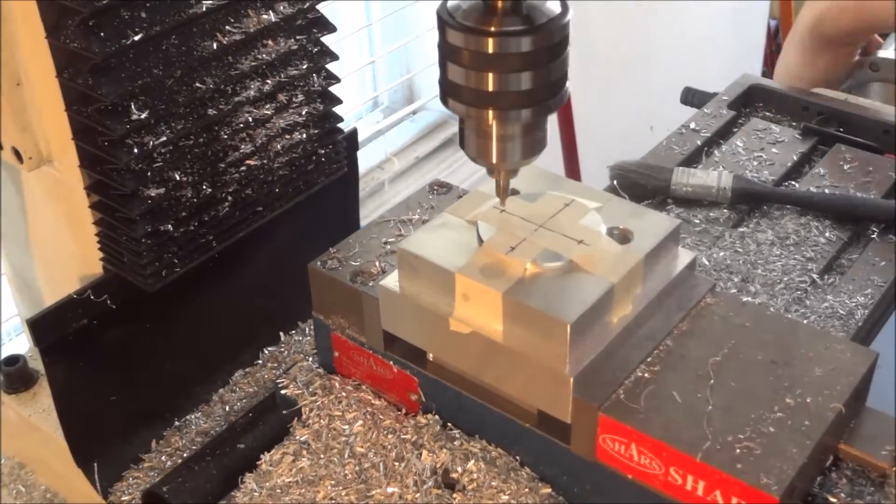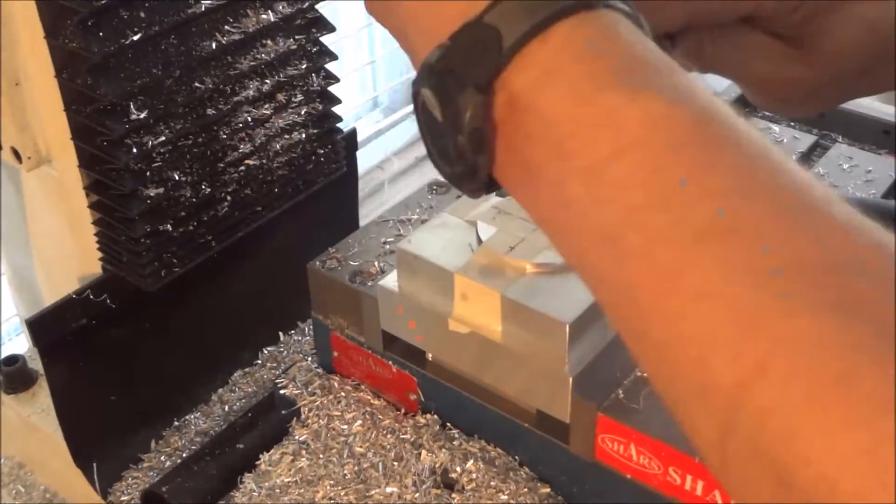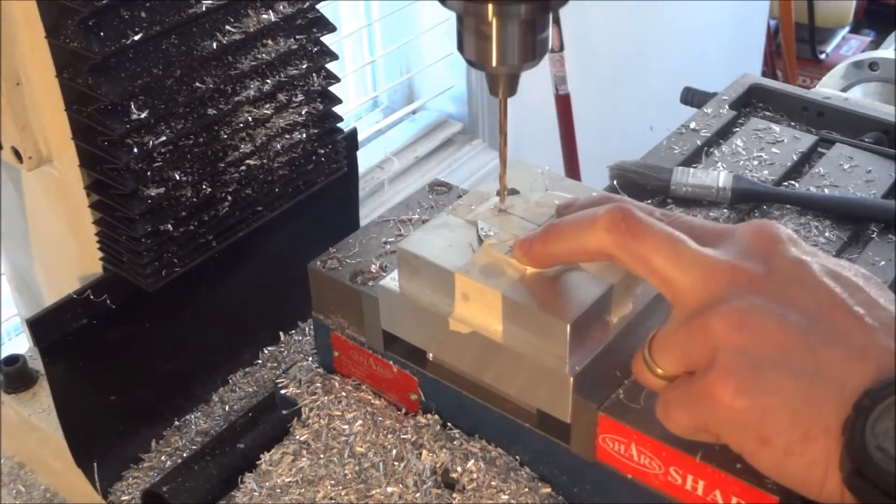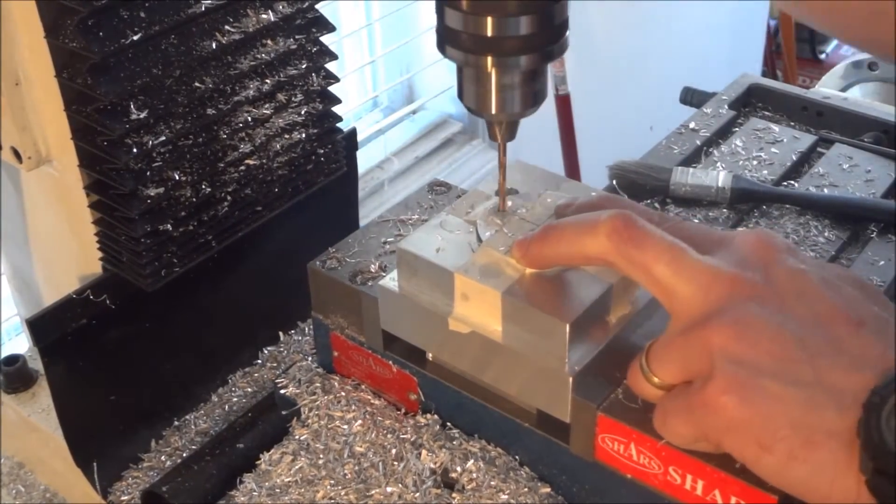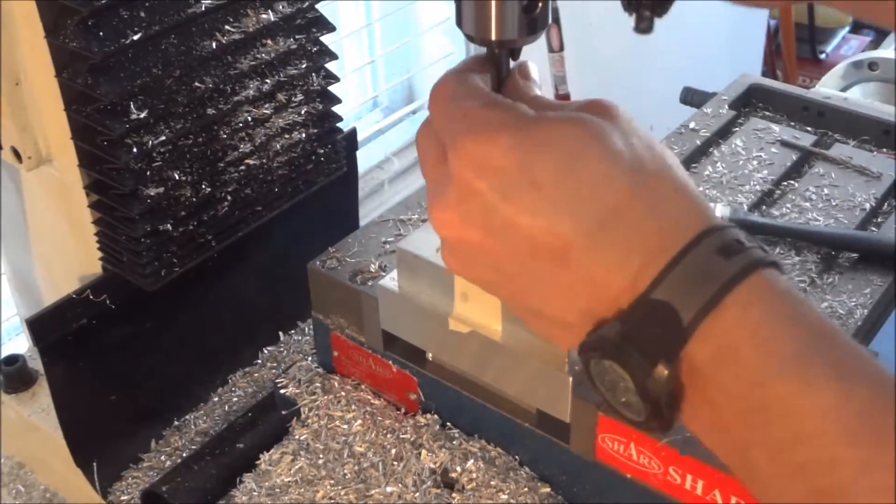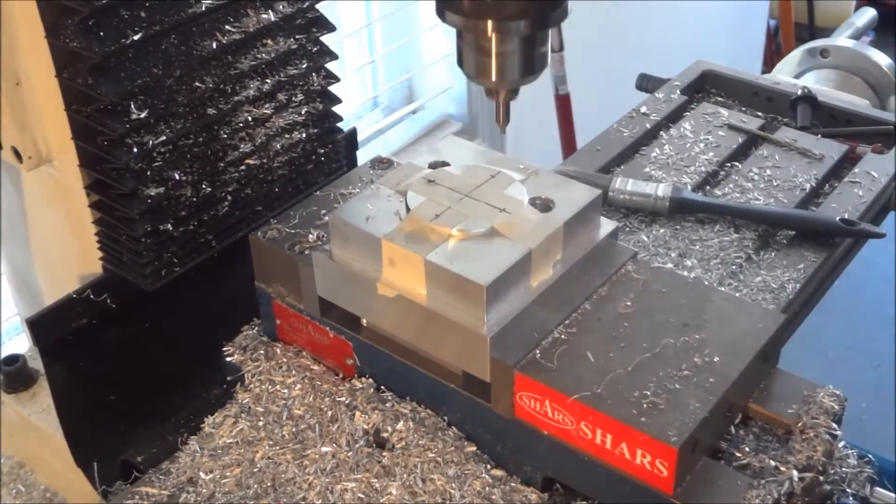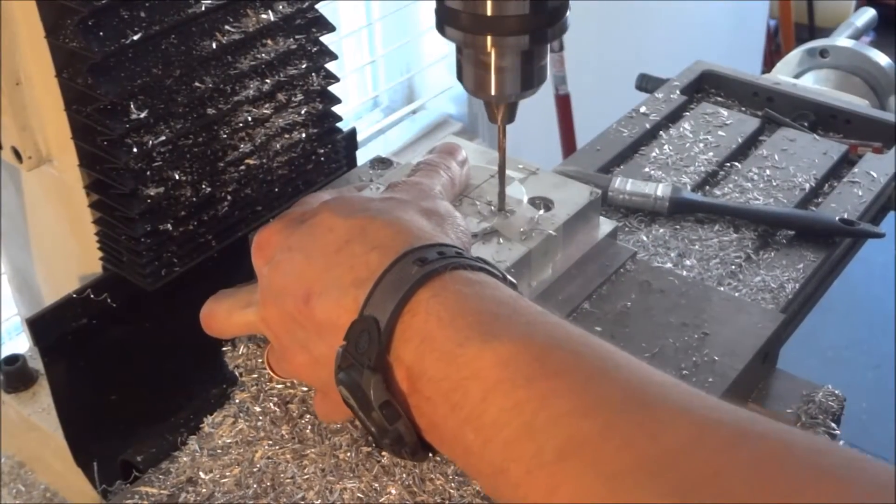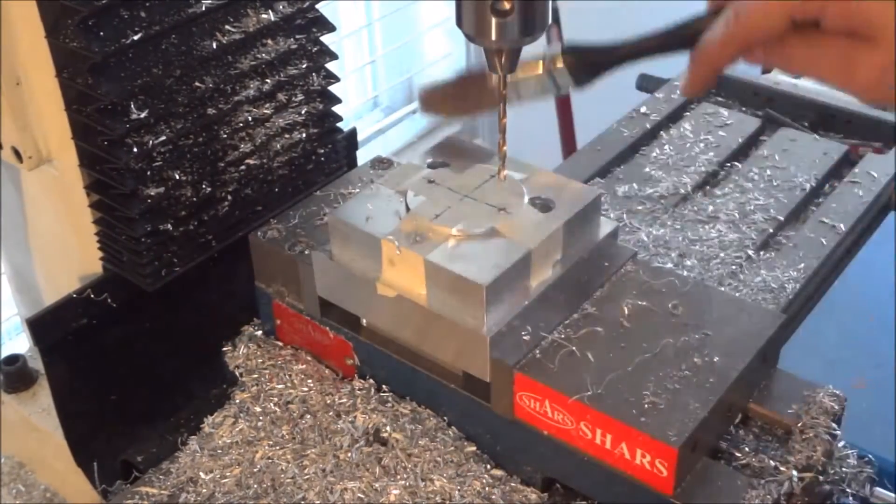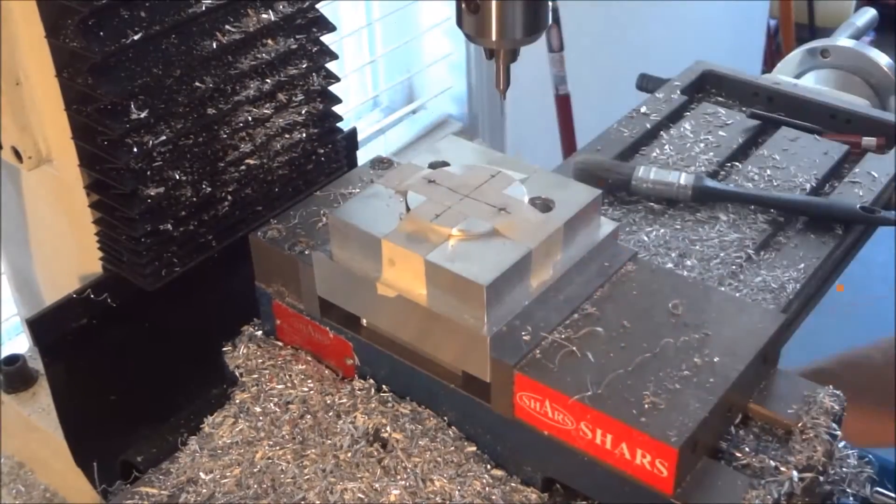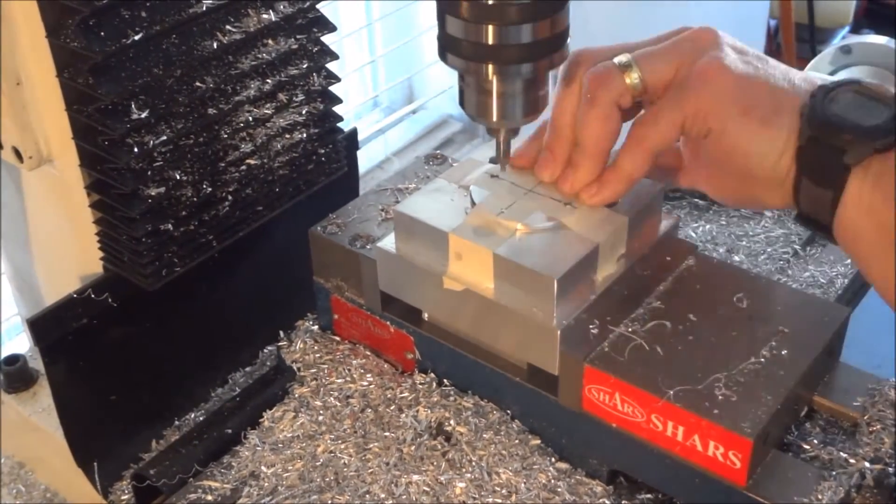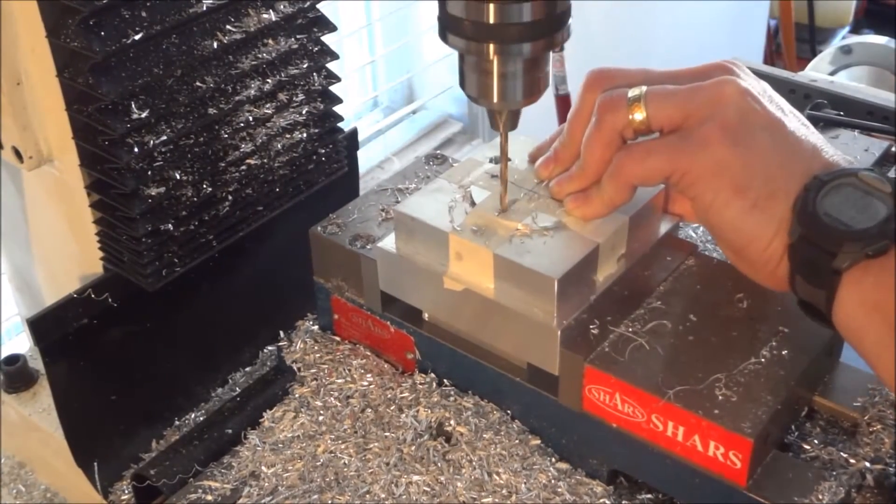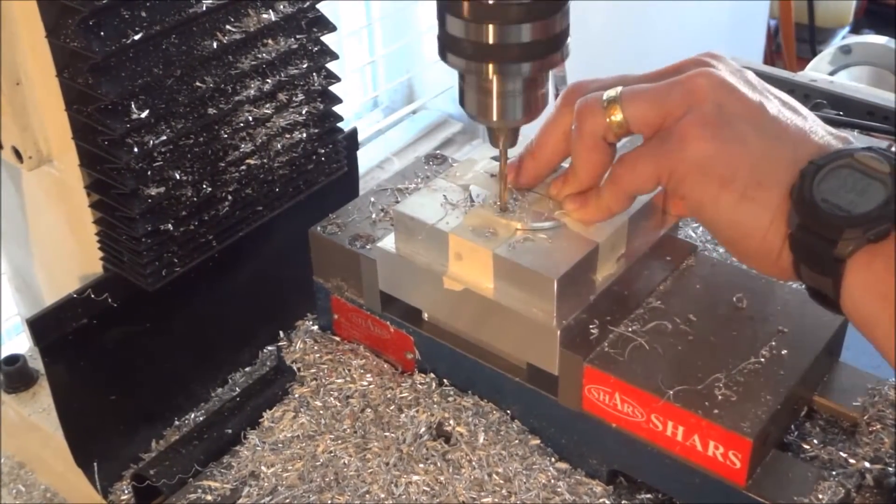Now I've got the bearing cover that we machined earlier and I've got it taped down to the bearing block, and I'm just again drilling these holes for the tap so that I can get the bearing cover mounted. Pretty much the same process I went through on the X and the Y: center drill, drill and tap.